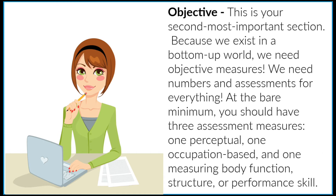Number two: objective. This is your second most important section. Because we exist in a bottom-up world, we need objective measures — numbers and assessments for everything. At the bare minimum, you should have three assessment measures: one perceptual, one occupation-based, and one measuring body function, structure, or performance skill.